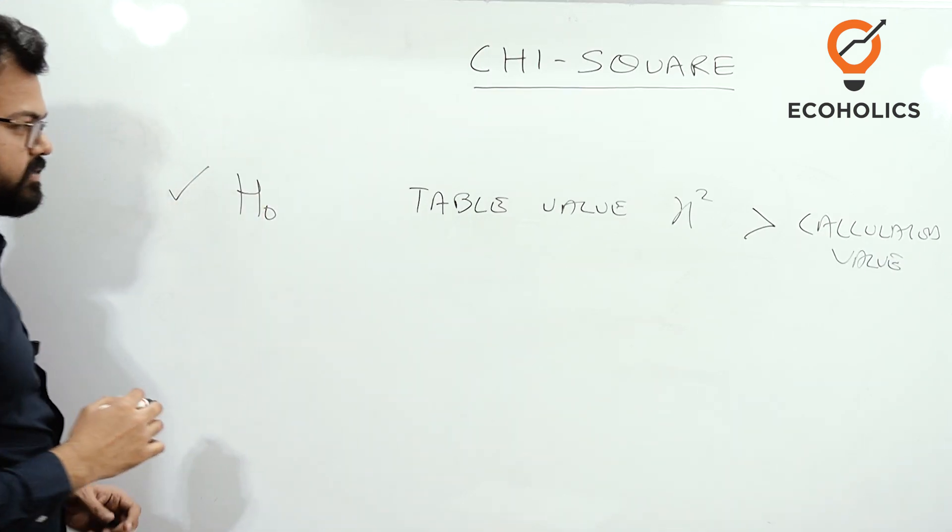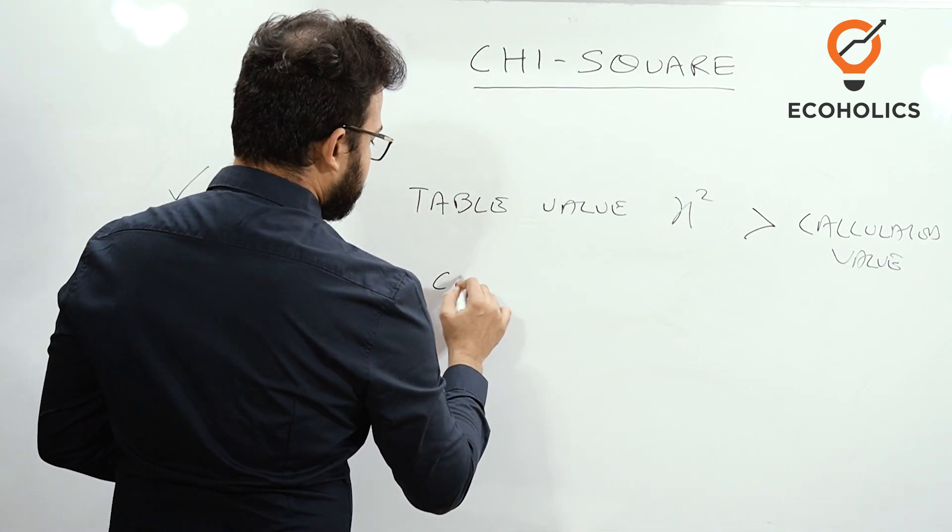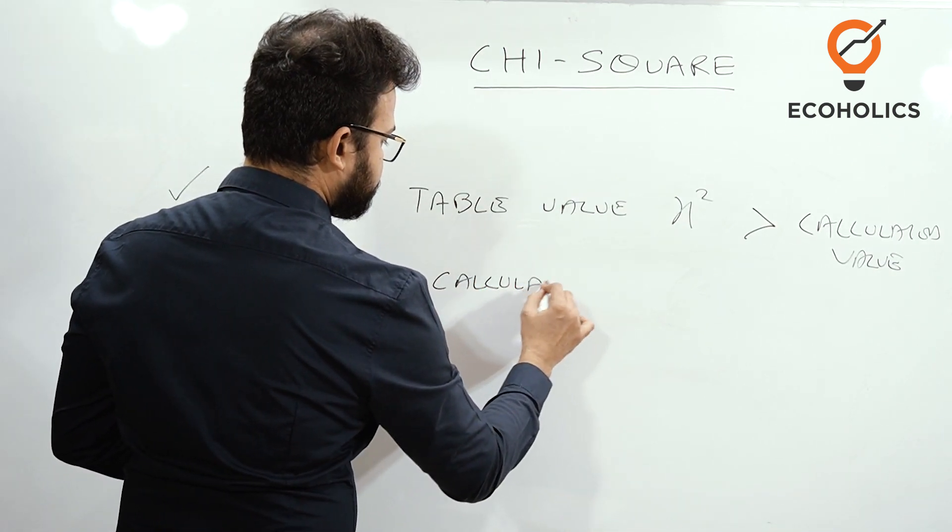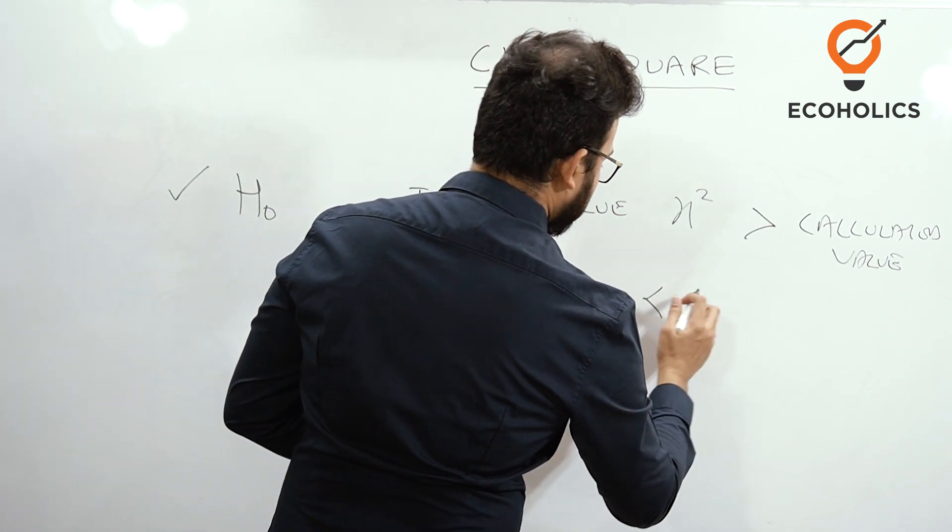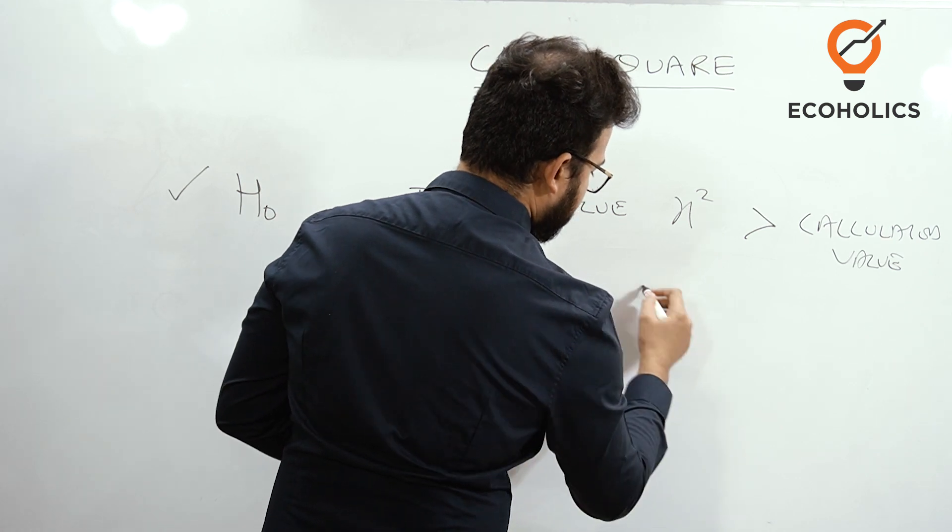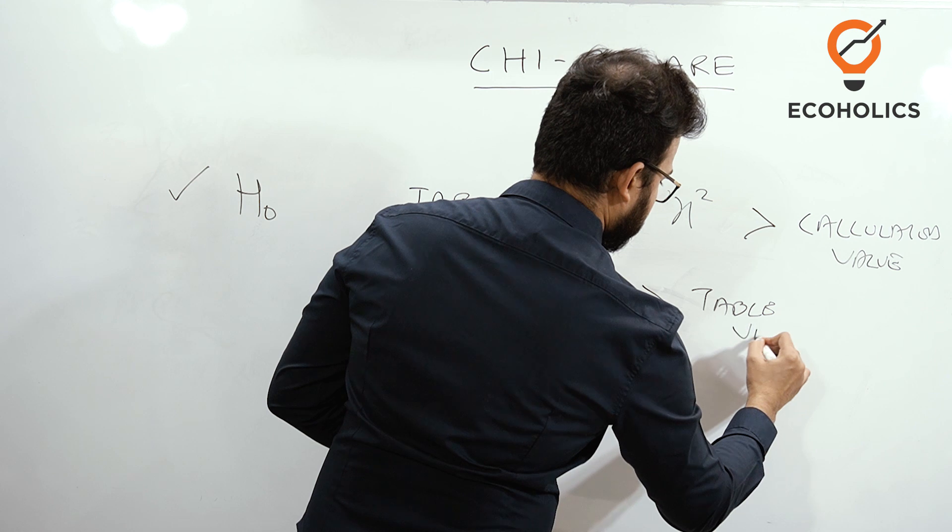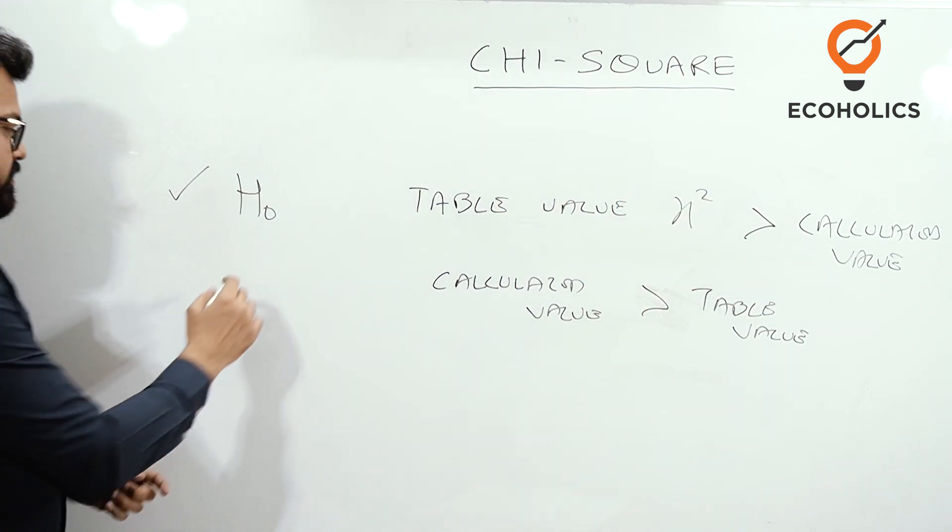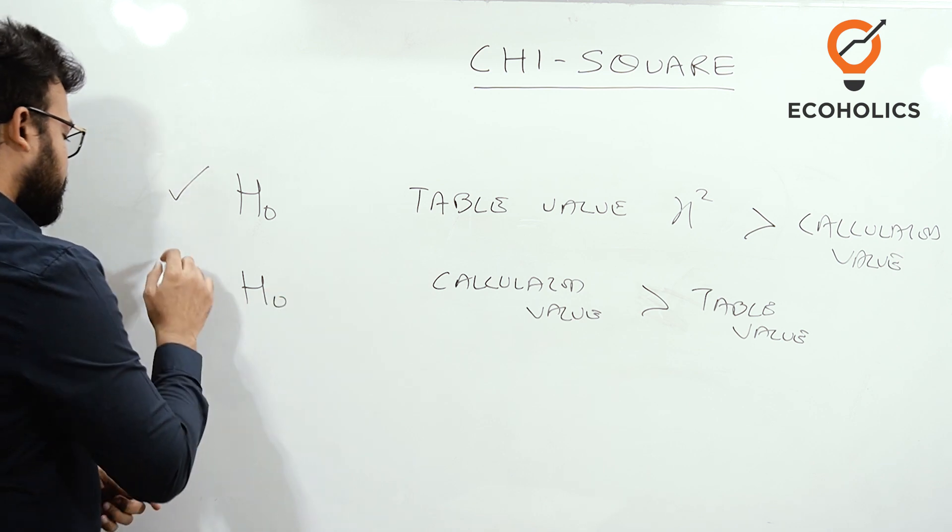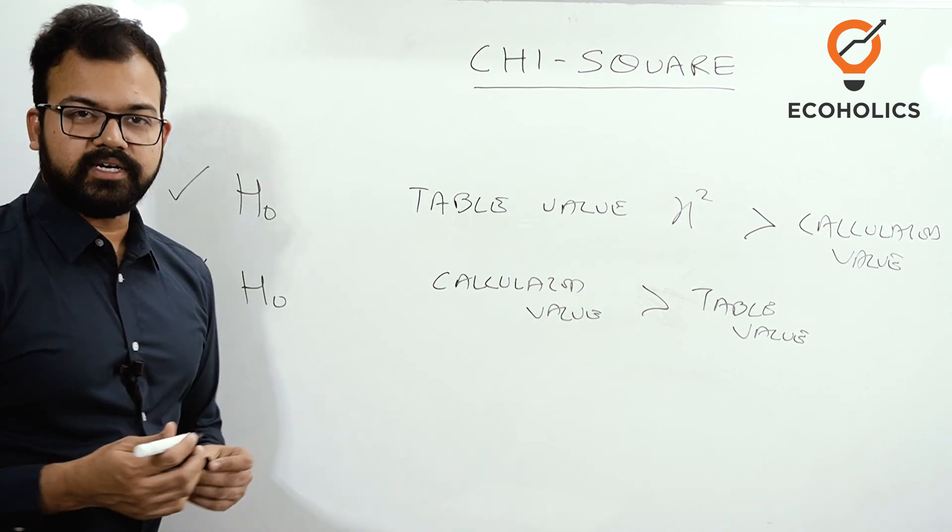When it is vice versa, meaning the calculated value is greater than the table value, what will happen to H0, the null hypothesis? We reject it and accept the alternative hypothesis.